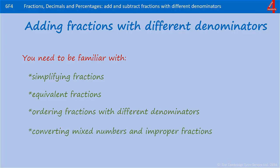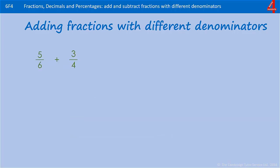And converting mixed numbers and improper fractions. The first one we're going to add is five sixths add three quarters.